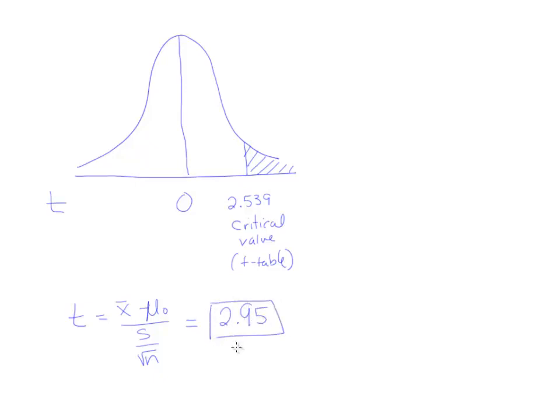What you do with your test stat is you place it on the curve and you determine where it lands with regard to the critical value. 2.95 is clearly larger than the critical value, so it ends up landing over here in the right tail.